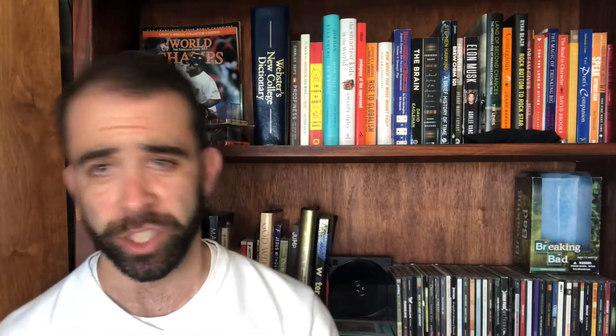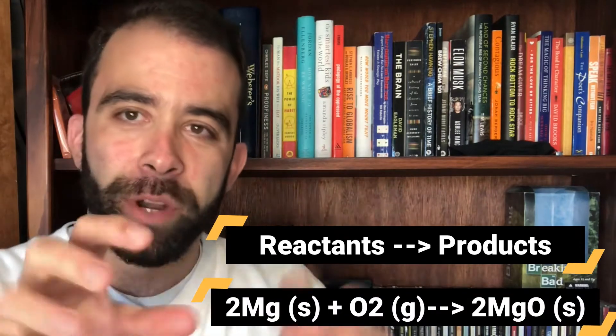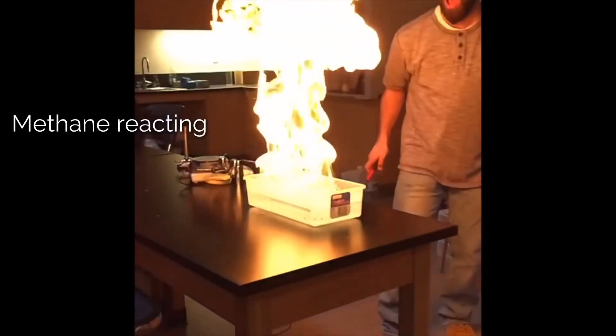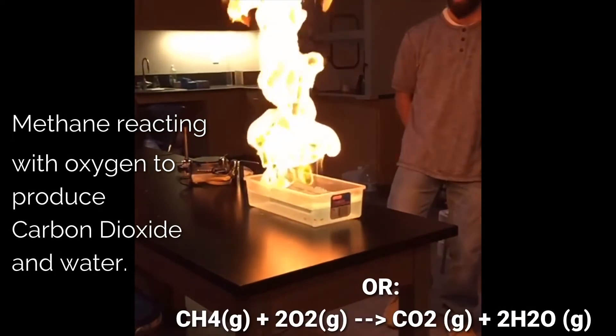There are three parts for every chemical equation. We have reactants, products, and state symbols. Reactants are always going to be the left side of our chemical equation. The arrow is the middle portion that separates reactants from products. So the reactants come together and they form products. Let's take a look at this example. Here we have methane reacting with oxygen to form carbon dioxide and water.